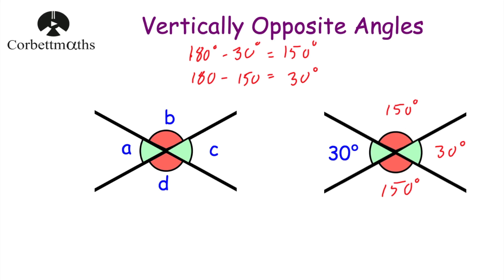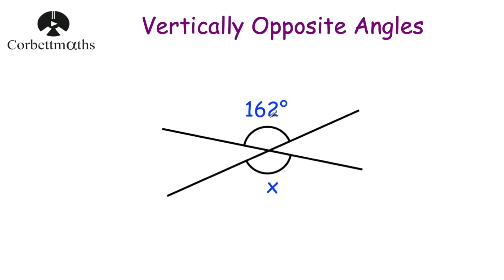Let's have a look at a question now. Here we've got two straight lines across each other and we've got x and 162 degrees, and we've been asked to find the size of this angle. Because the lines are straight and they cross each other, we've got vertically opposite angles, so these angles are going to be equal to each other. So angle x would be 162 degrees.